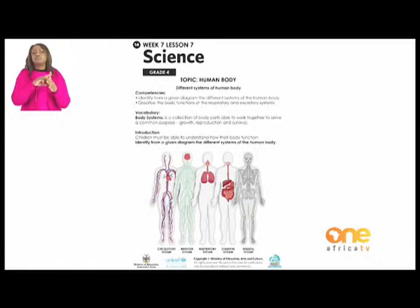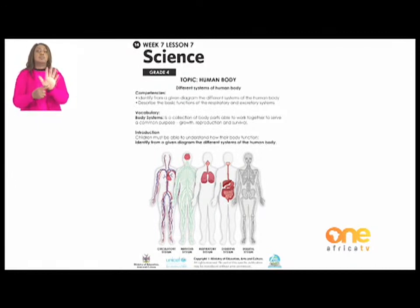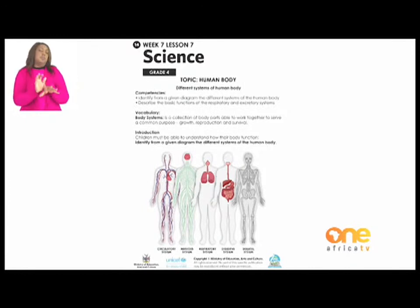Competencies: identify from a given diagram the different systems of the human body; describe the basic functions of the respiratory and excretory systems. Vocabulary: 'body systems' is a collection of body parts able to work together to serve a common purpose such as growth, reproduction and survival. Children must be able to understand how their body functions. The circulatory system is made of the heart, blood vessels and veins — the heart pumps blood to all parts of the body.